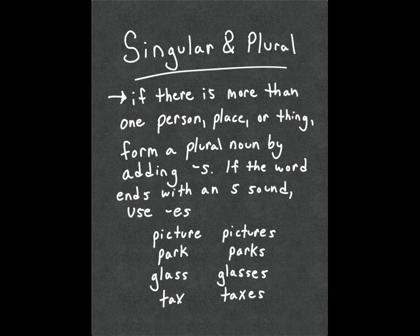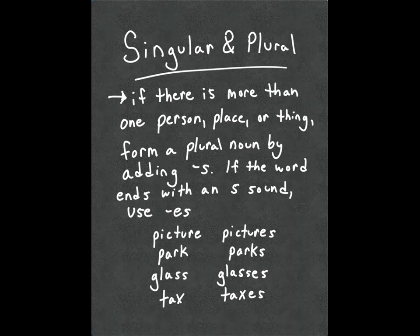Singular and plural — if there is more than one person, place, or thing, you need to pluralize it. Very easy in English: you just add the letter S to the end of the word. Pitcher — pitchers. Park — parks. Now, what if the word already ends in that S sound, such as "glass" or "tax"? We add ES to pluralize it so we can hear that secondary S. Glass — glasses. Tax — taxes.